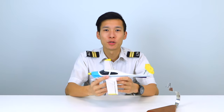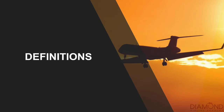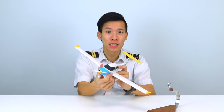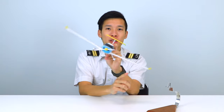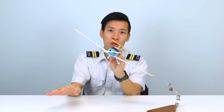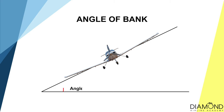Before we dive into how to conduct a medium level turn in flight, we'll talk about some of the terms related to it. First and foremost is the angle of bank. If you've been on an airplane, you would know the aircraft turns by rolling or banking. The angle of bank is the angle formed between the lateral axis and the ground or horizon when the aircraft is banking.